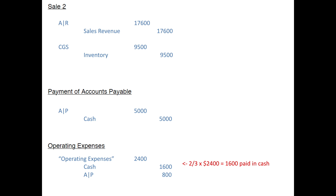The next two entries: we paid $5,000 on account, so we debit Accounts Payable and credit Cash — we're paying toward our debt. The final entry is for operating expenses of $2,400. Two-thirds, which is $1,600, was paid in cash, so we credit Cash for $1,600. The remainder is credited to Accounts Payable.